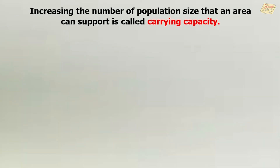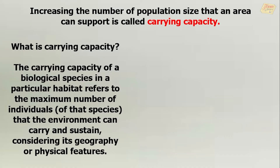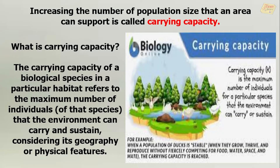The maximum number of a population size that an area can support is called carrying capacity. The carrying capacity of a biological species in a particular habitat refers to the maximum number of individuals of that species that the environment can carry and sustain, considering its geography or physical features. For example, when a population of ducks is stable — when they grow, thrive, and reproduce without fiercely competing for food, water, space, and meat — the carrying capacity is reached.